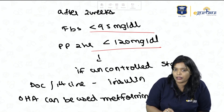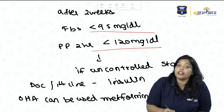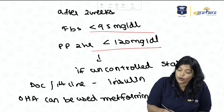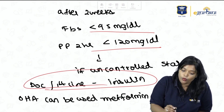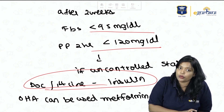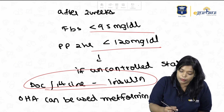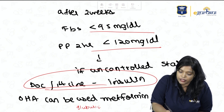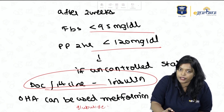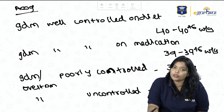The drug of choice for GDM is insulin. Oral hypoglycemic agents like metformin or glyburide can be used, but the drug of choice remains insulin.